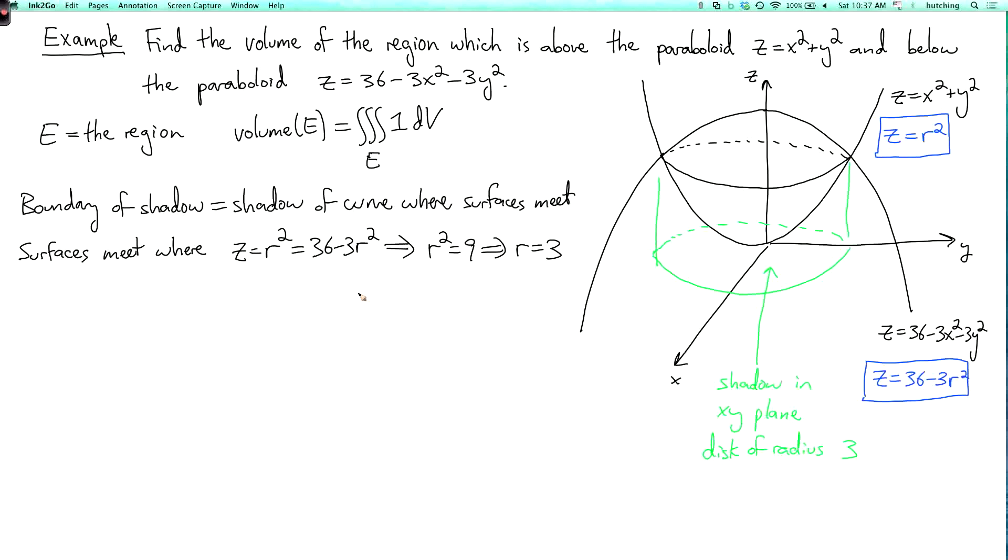Okay, so now we can set up the integral for the volume. So the volume is the integral of, well, theta goes from 0 to 2π because it's a disk. And r goes from 0 to the radius of the disk, which is 3. And now we just have to be a little bit careful about the z limits. So the z limits go from the lower surface to the upper surface. Now the lower surface is z equals r squared.